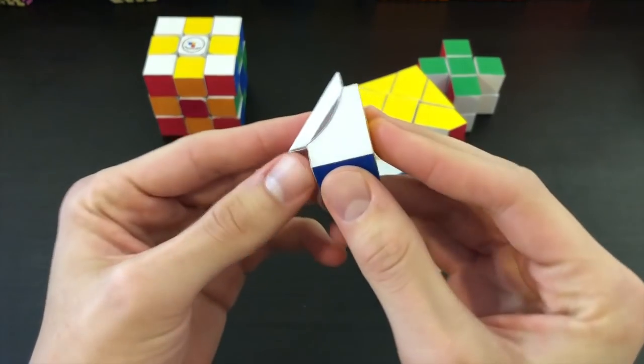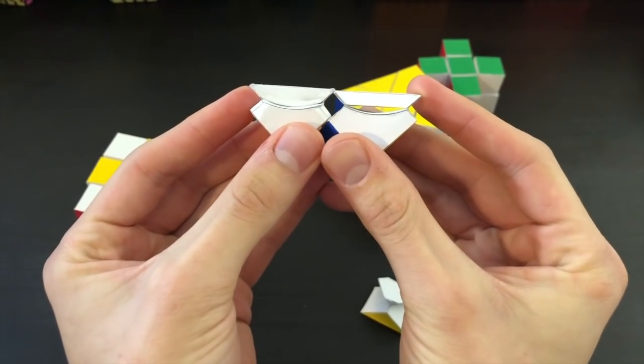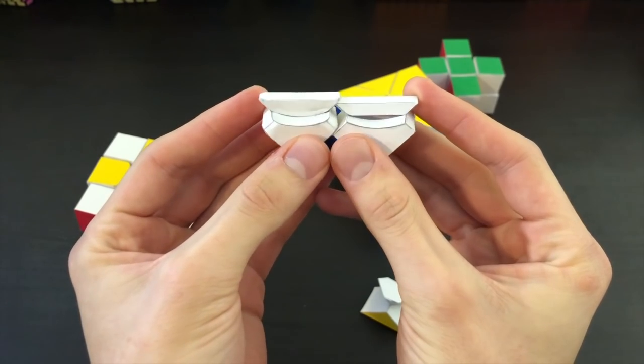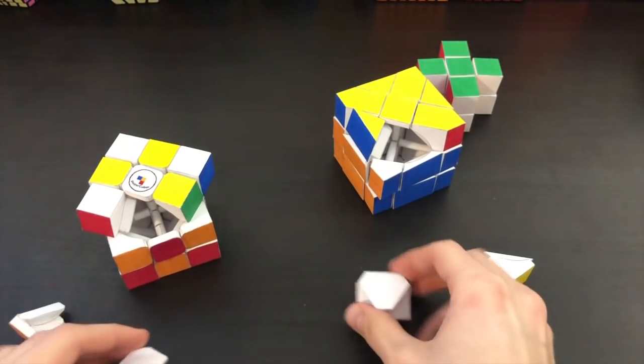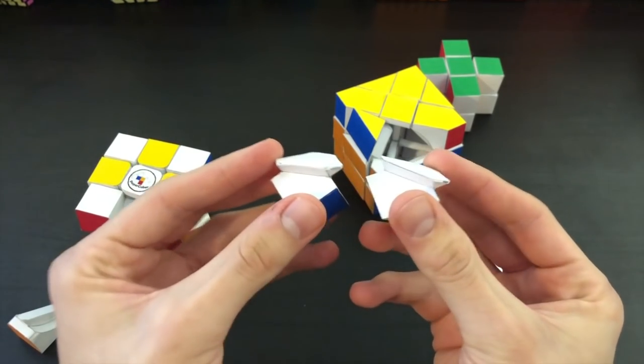All right so here we have an edge piece. They're pretty similar as you can tell. Pretty much identical except for that gap underneath this one. As for the corners, these are also pretty much identical. Let's go ahead and move on to the 1x1x2x cube.